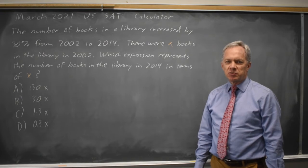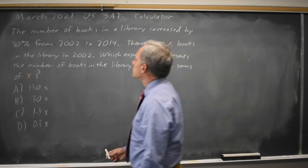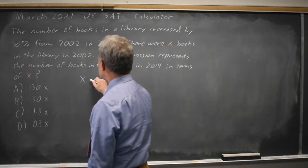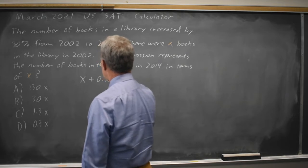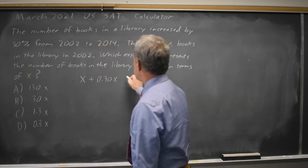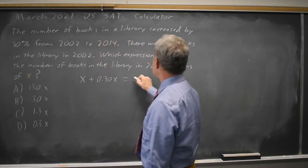So I had X in 2002 plus 30% of X gives me the number in 2014.